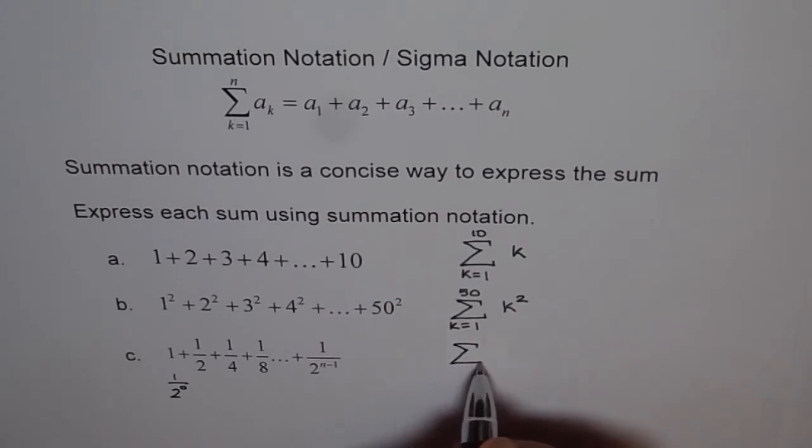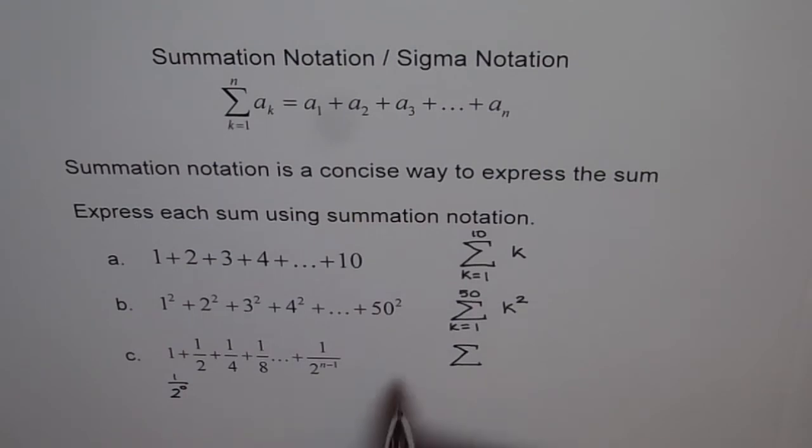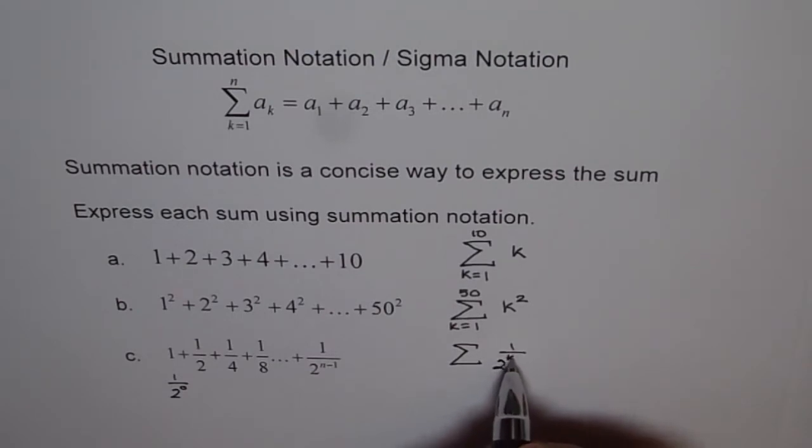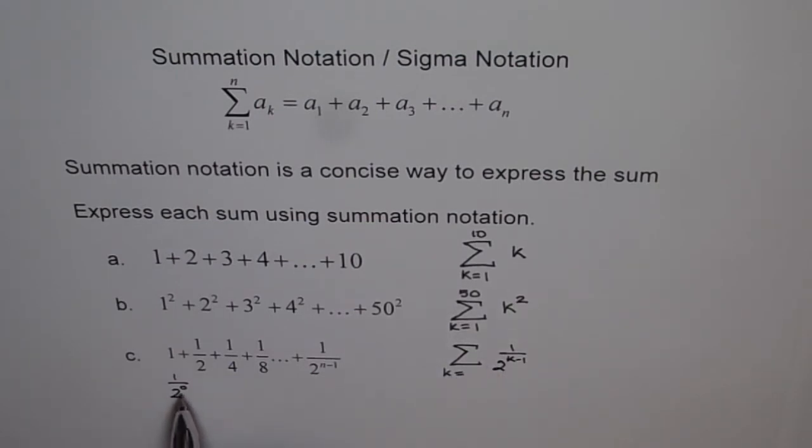So you learned in sequences how to write a general term. So that general term is being represented by K, whatever, here. Do you understand? So we write our general term here. So general term will be 1 over 2 to the power of K minus 1, where K changes from first term for K, we want to make it 0. So K should be 1, do you see? 1 minus 1 is 0. So we get our first term.